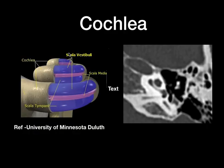Coming to the cochlea — congenital anomalies of the cochlea are very common, and we need to identify whether the cochlea is present or absent. Always look for the presence of the cochlea and the modiolus. You can see the basal turn and the apical turns, which are separated by the scala media and tympani. The bone structures appear like a stack of coins, indicating the cochlea is present with normal cochlear turns completely present.